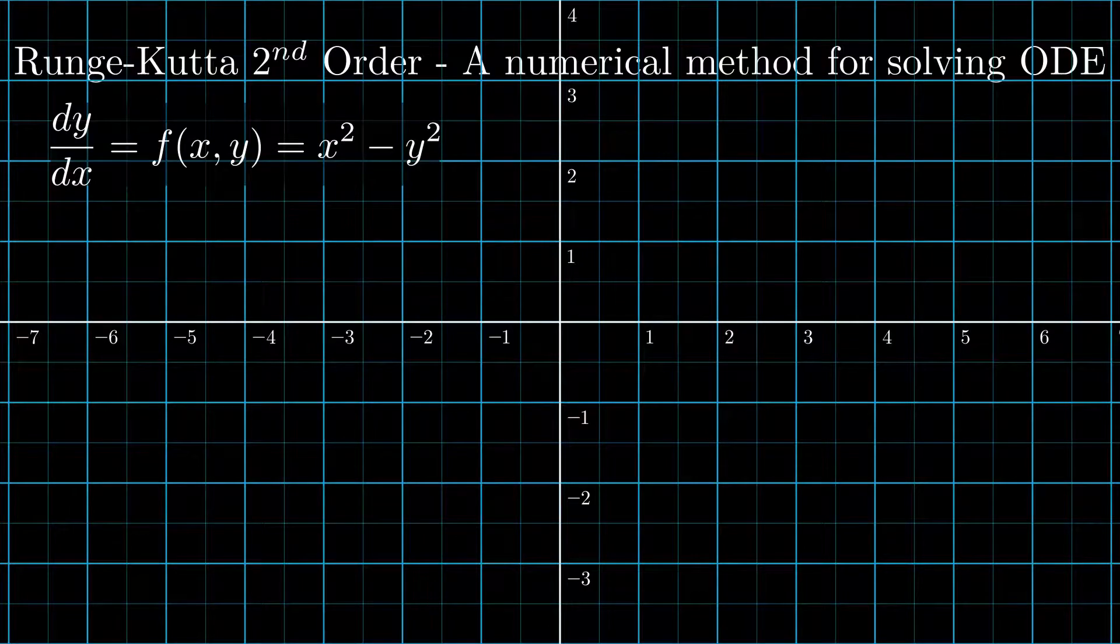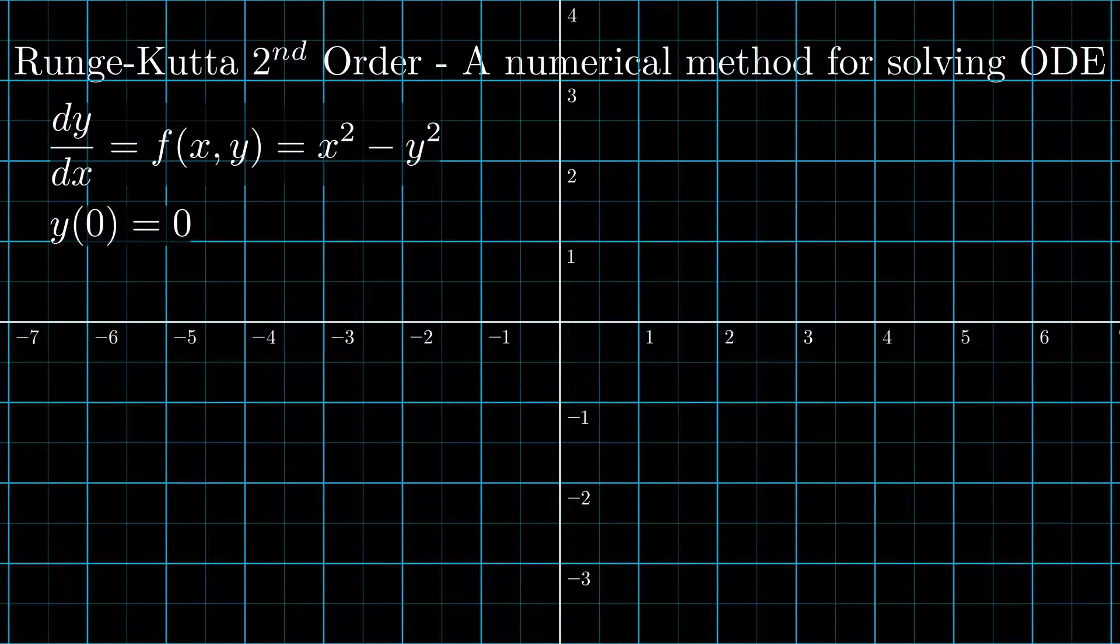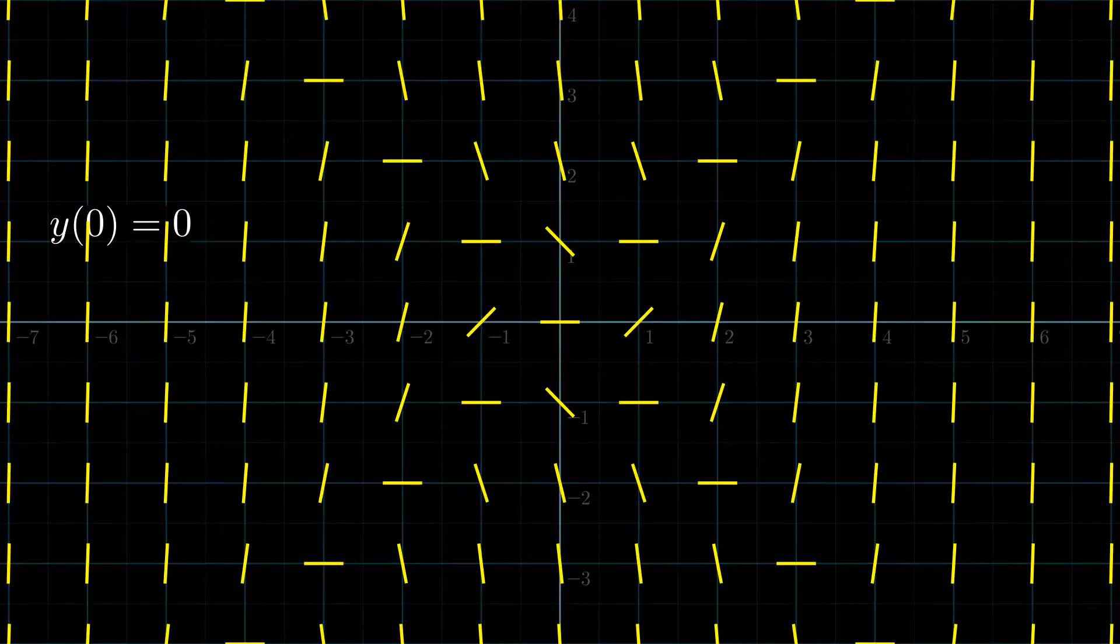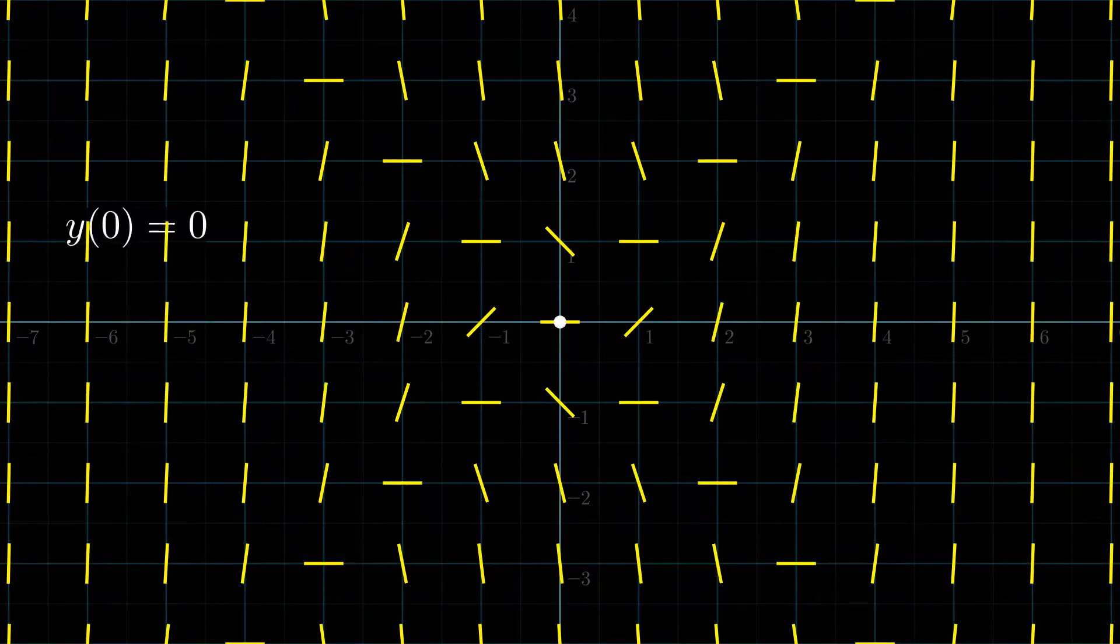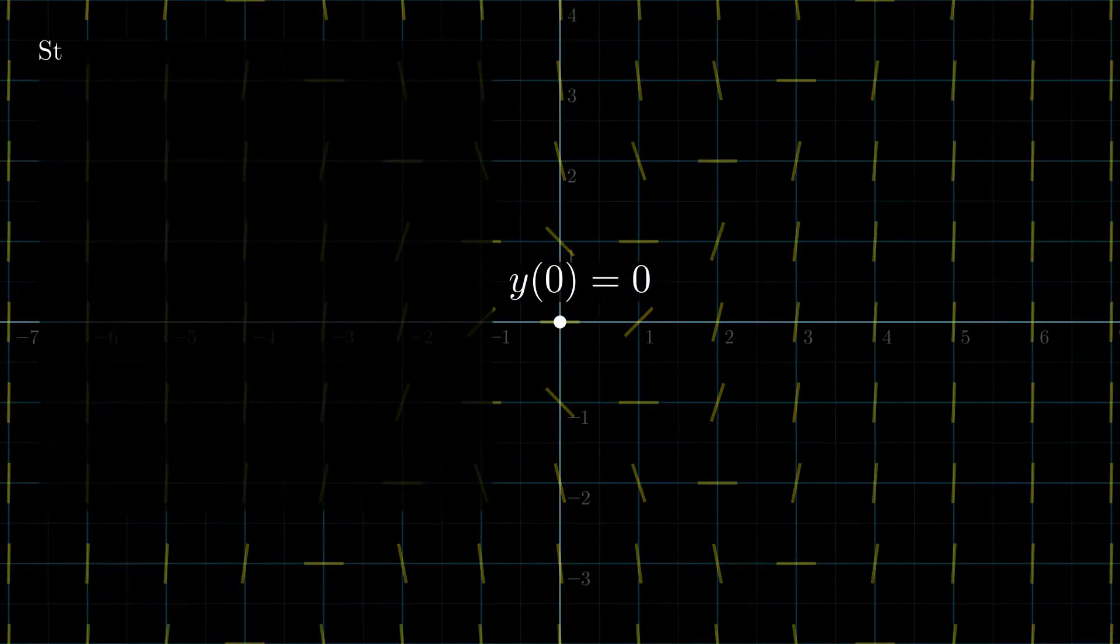We have been given the same initial value problem as before and are supposed to find the solution. Runge-Kutta method builds on Euler's method to give a closer approximation in fewer steps.